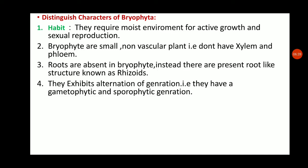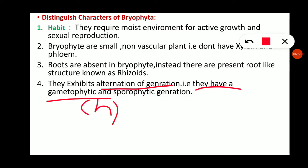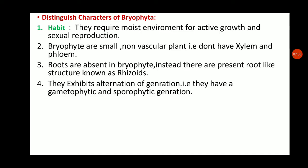In Bryophyta, they exhibit alternation of generations — having both gametophytic (N, haploid) and sporophytic (2N, diploid) generations. In Bryophytes, gametophytic generation is dominant over sporophytic generation, and the sporophytic generation is totally dependent on the gametophytic generation.